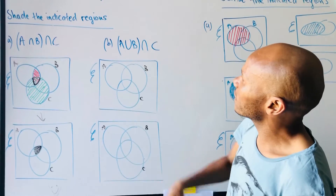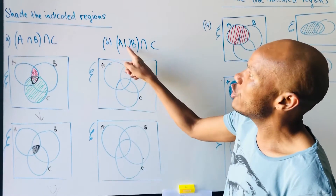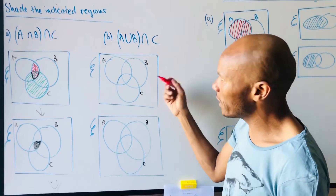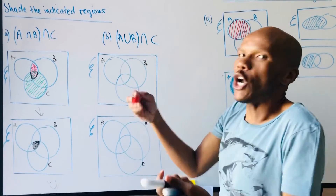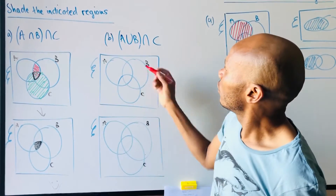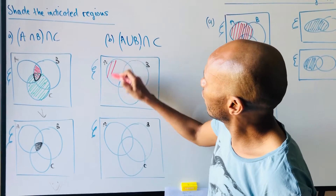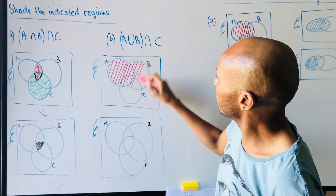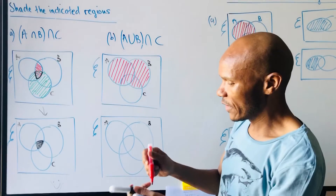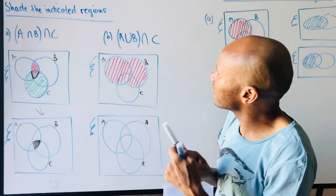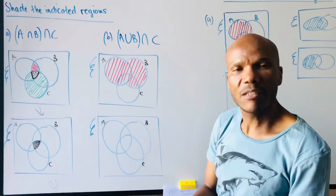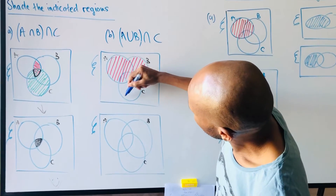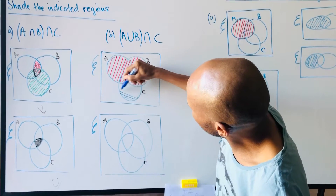This one says A union B, so I'm going to shade A union B — A or B — so both of them are shaded. I'm using my red stripes all over A and B, and then I take a different pen and shade C.